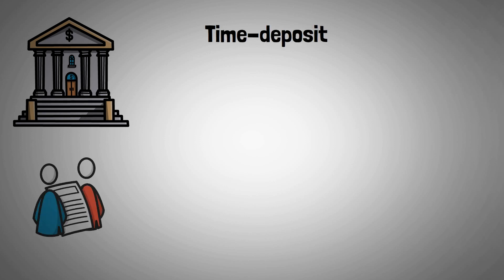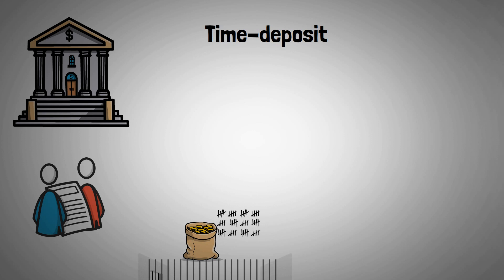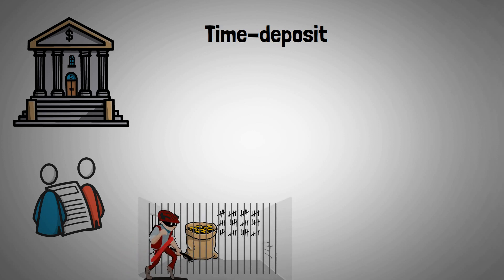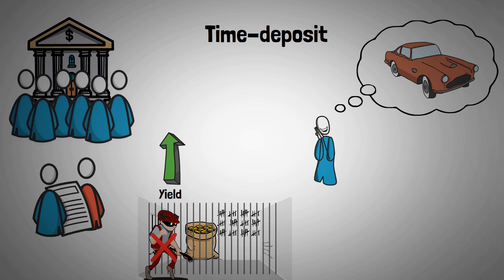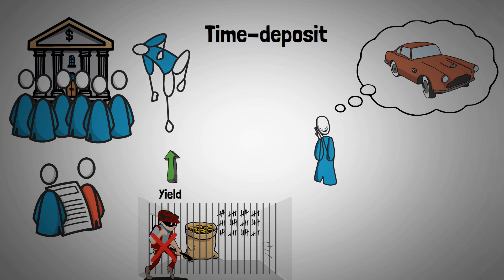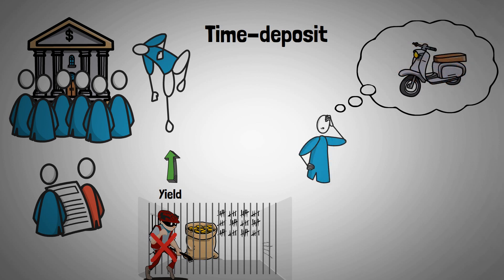A term account is when you sign a contract saying you block a certain amount of money for a certain time. You're putting that money at the bank's disposal for the agreed period, meaning you can't withdraw any of that money until the end of the contract. Most of the time you get more earnings, or more yield, on this type of account than with a regular savings account. However, in traditional banks there are a lot of intermediaries who need to make a living, and this is charged to the client, which means that yield will never be extremely high.